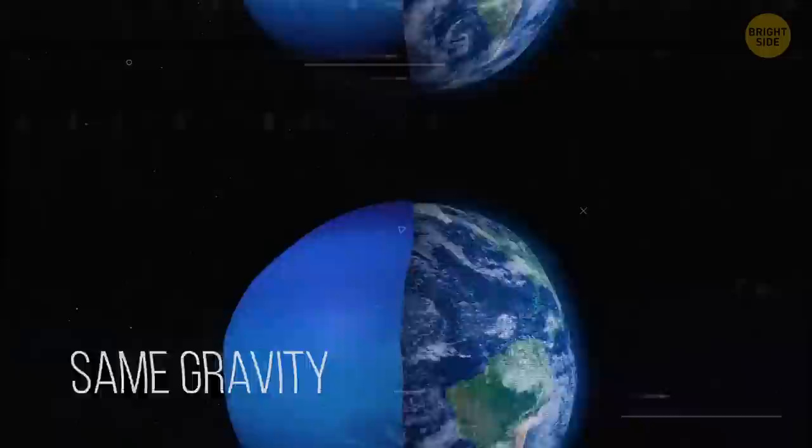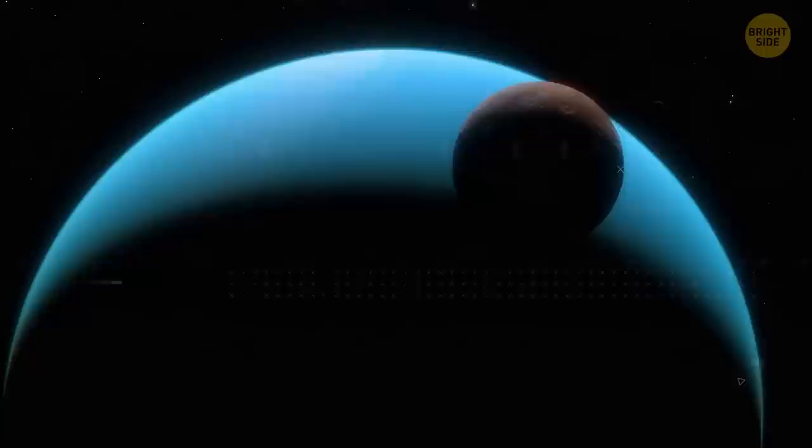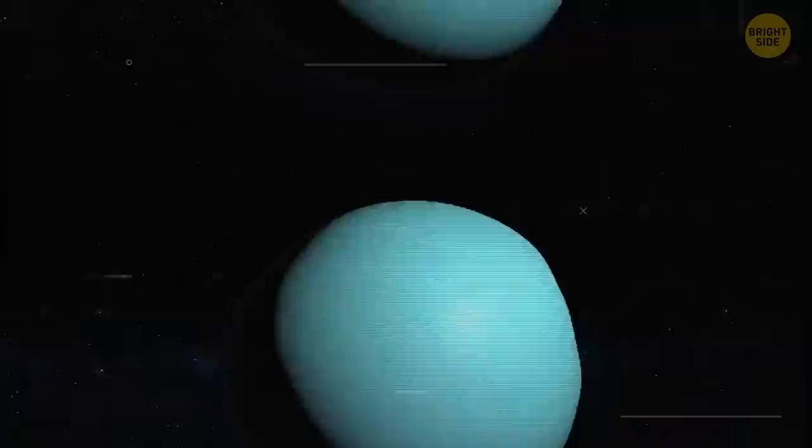As we make our way closer to the Sun, we pass the next gas giant, Uranus. That non-conformist planet that goes around the Sun, basically rolling on its side. One full orbit is 84 Earth years. So, you might be lucky enough to celebrate your first birthday in your whole life there. Only one party, so you better make it count.